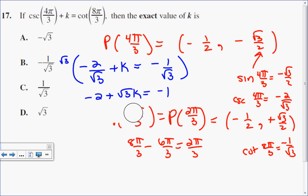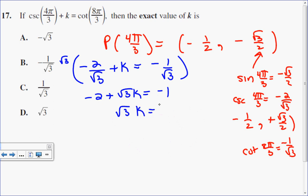Then I just want to solve for k. To solve for k, I'm going to add 2 to both sides. So I have root 3k equals 1. Then divide both sides by root 3, and I get k is equal to 1 over root 3. So the answer to this question is C.